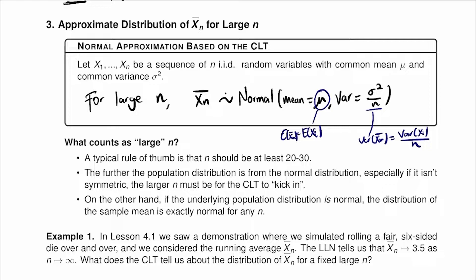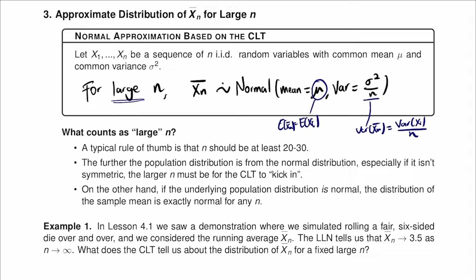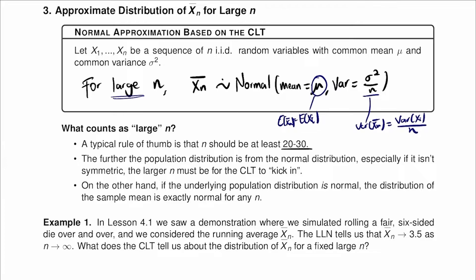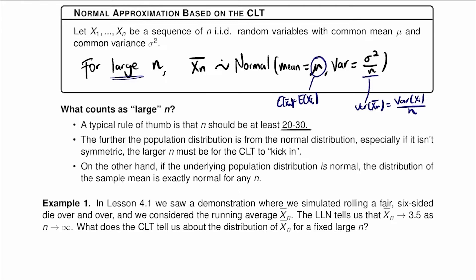What counts as large n? A typical rule of thumb is that n should be at least 20 to 30. But it depends on the problem. If the population distribution is far from normal, especially if it is not symmetric, the larger n must be for the CLT to kick in. If we are not in the normal distribution case, we will need a larger n value to apply the CLT.